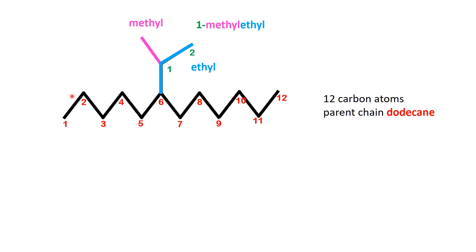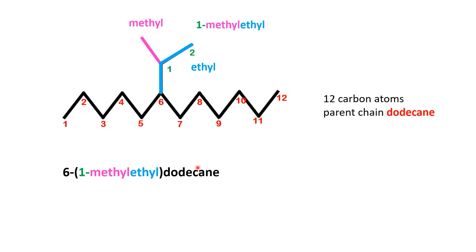Now let's return to the parent structure. The complex substituent we just named, 1-methylethyl, is still attached to the 6th carbon of the dodecane chain. Following IUPAC naming rules, the full name of the molecule becomes 6-(1-methylethyl)dodecane. When writing the full name of the compound, make sure to place the entire complex group name in parentheses, preceded by a number that indicates the position of the group on the main chain.